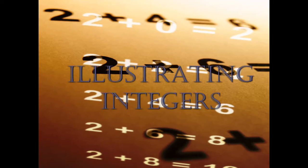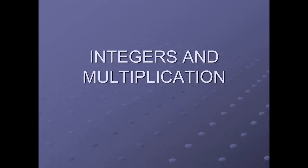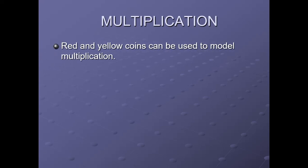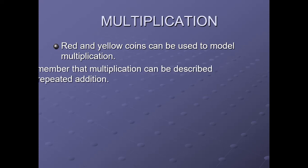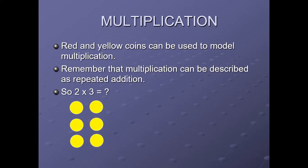Today's topic is Illustrating Integers — specifically, multiplication and division of integers. Let us see the multiplication of integers. Red and yellow coins can be used to model multiplication. Remember that multiplication can be described as repeated addition. Positive coins are represented by yellow color and negative coins are represented by red color.